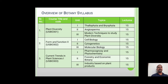In SYBSC, the Botany subject has three theory papers. The first paper is Plant Diversity, having three units: the first unit is based on Thallophyta and Bryophyta, the second unit is from Angiosperms, and the third unit covers modern techniques to study plant diversity.